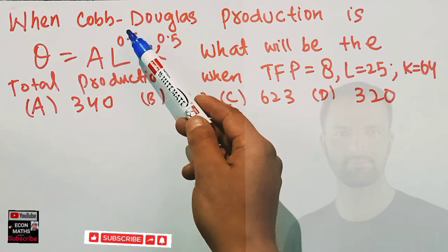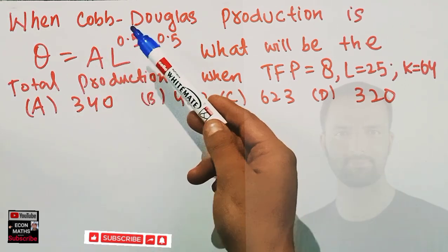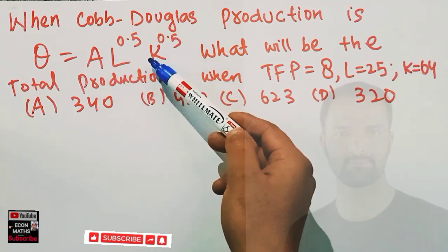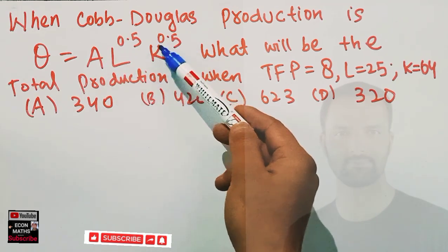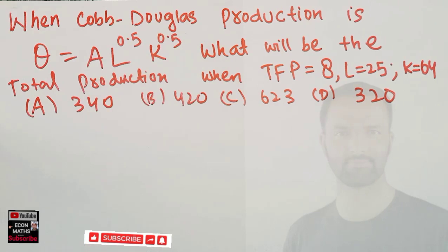The 0.5 exponent is alpha, the output elasticity of labor, and the other 0.5 is beta, the output elasticity of capital. Our production function is structured this way.